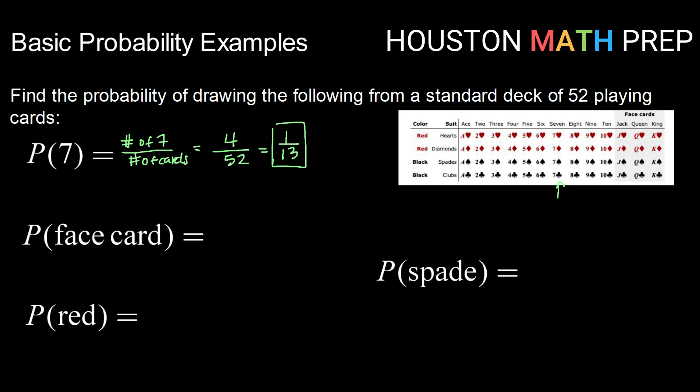All right, checking out our next probability: probability of drawing a face card. Again, our total number of cards is 52. So now we need to look at how many face cards are there. Face cards, again, are jacks, queens, and kings. So there are 4 jacks, 4 queens, and 4 kings, making 12 face cards.